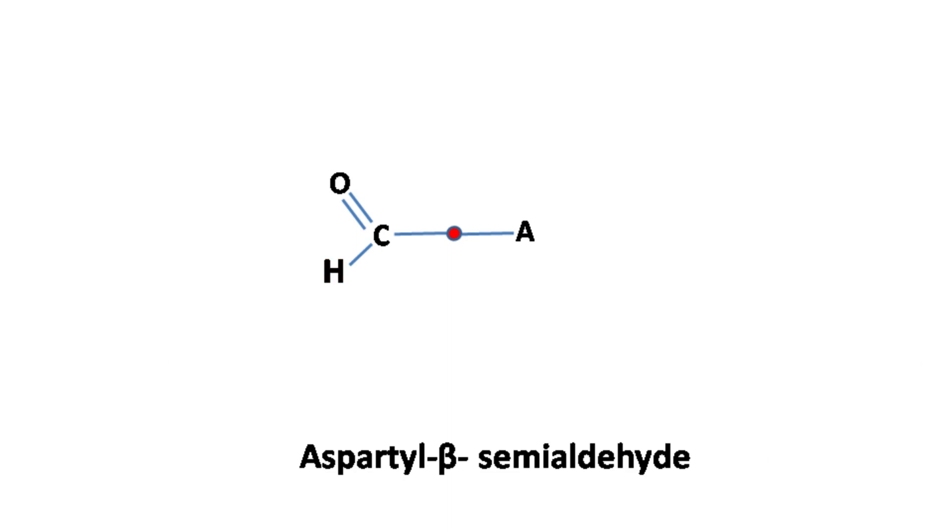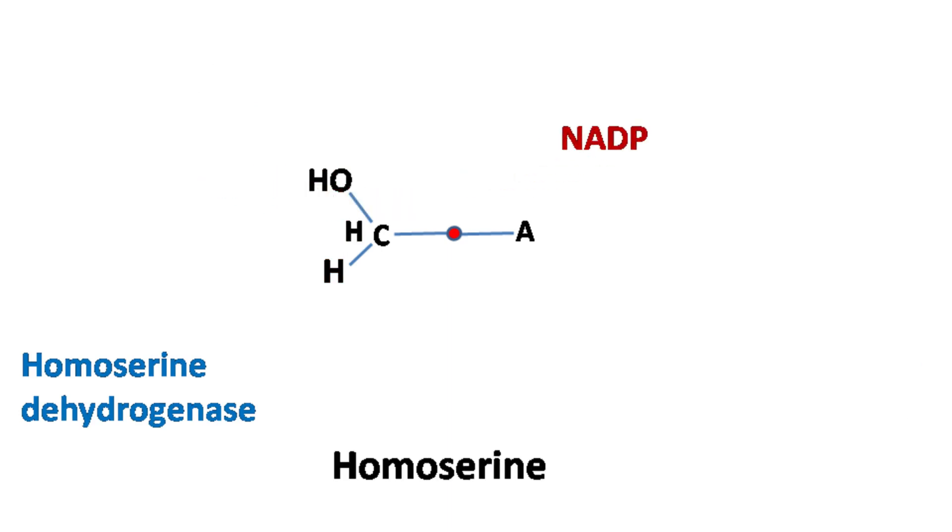Homoserine dehydrogenase then converts aspartyl beta-semialdehyde to homoserine with the help of NADPH.